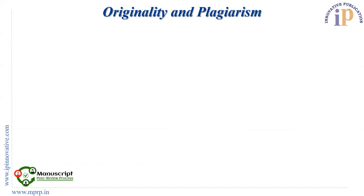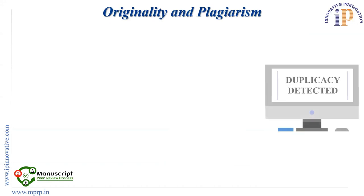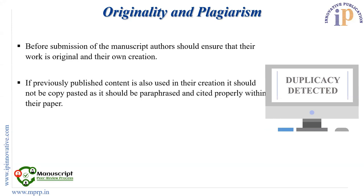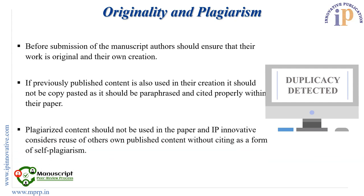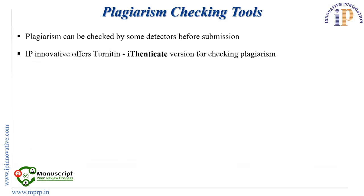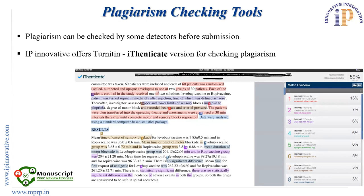Originality and plagiarism: Before submission of the manuscript, authors should ensure that their work is original and their own creation. If previously published content is used, it should not be copy-pasted as-is — it should be paraphrased and cited properly within their paper. Plagiarized content should not be used, and reuse of others' published content without citing is considered a form of self-plagiarism. Plagiarism can be checked by detectors before submission; we at IP Innovative offer a Turnitin authenticated version for checking plagiarism. As shown in the picture, we can detect the duplicacy of submitted work and identify the original source of the content.